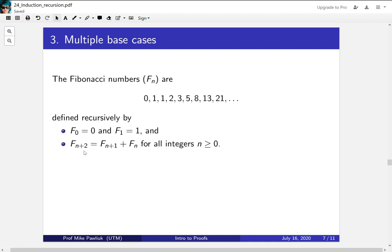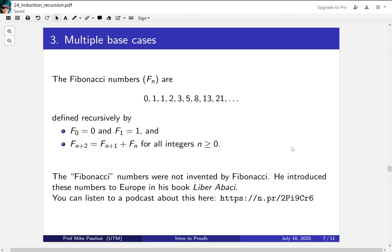And then Fₙ₊₂ is Fₙ₊₁ plus Fₙ. To put it another way, Fₙ₊₂ is the sum of the two previous things. So F₅ is F₄ plus F₃. Now we're going to be using the Fibonacci numbers. There's tons and tons of interesting stuff about them, but we're going to look at one thing. And before we continue, I want to mention that the Fibonacci numbers were not invented by Fibonacci. He introduced these numbers to Europe in his book Liber Abaci. So he introduced them to Europe, but they were well known outside of Europe before that. So you can listen to a podcast about this, and I'll link it in the description.